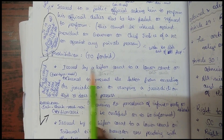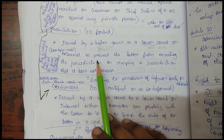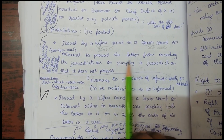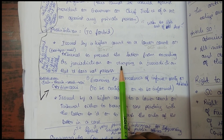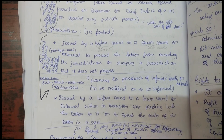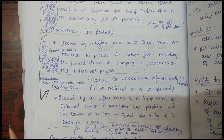Prohibition means 'to forbid.' It is issued by a higher court to a lower court to prevent the lower court from exceeding its jurisdiction. Through prohibition, you are stopping the lower court from acting beyond its territorial or subject-matter jurisdiction.